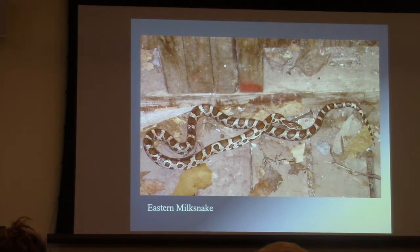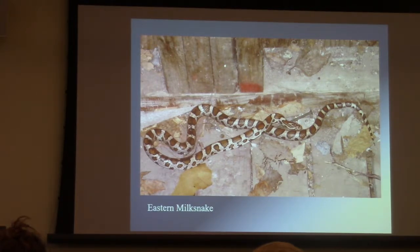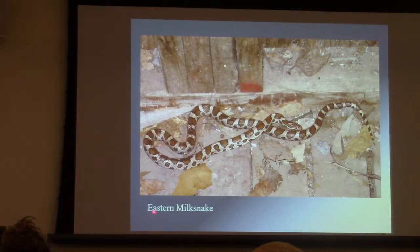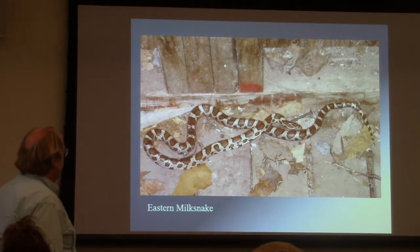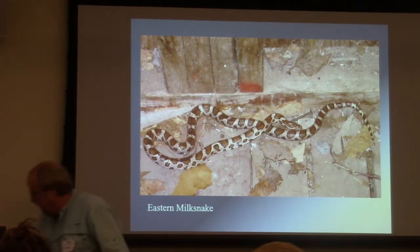I love that shot because it shows typical habitat — old barn, old garage. A lot of Vermonters and local northeasterners used to call this, and many still do, the spotted adder. But its most recently updated common name is eastern milk snake — that's fairly new within the last couple of years. I want to show you that particular critter.